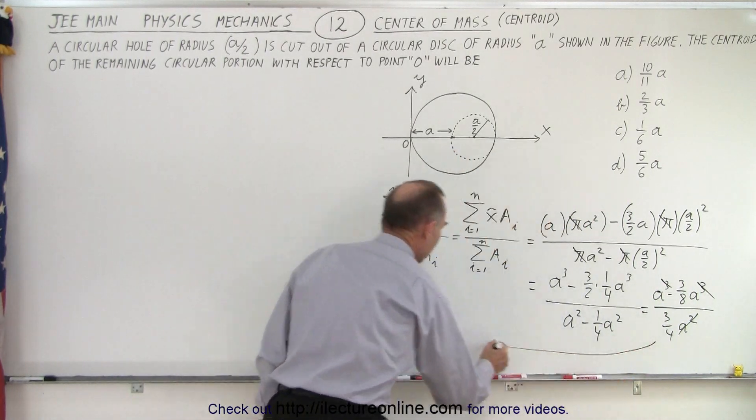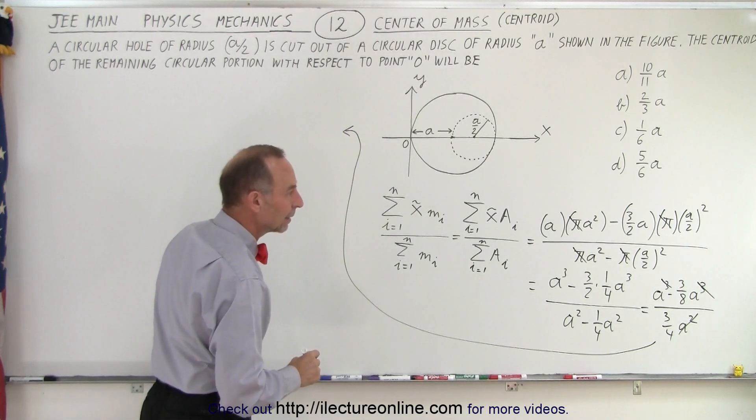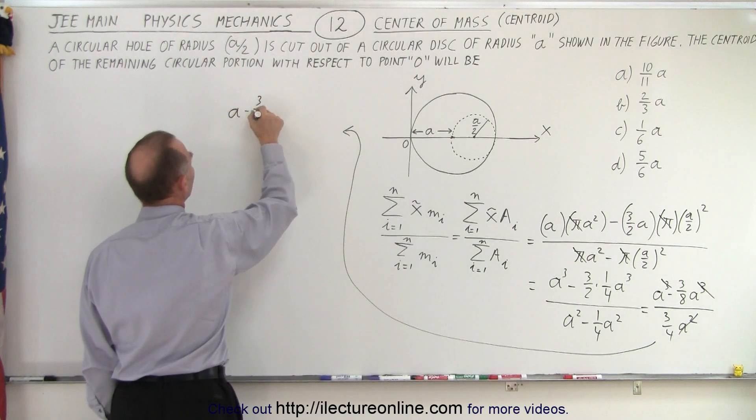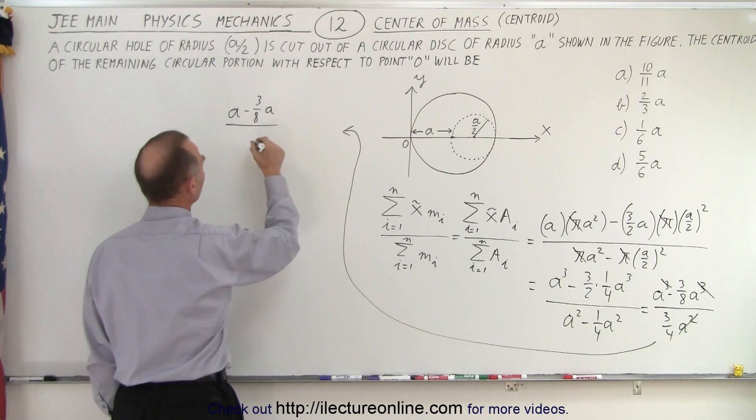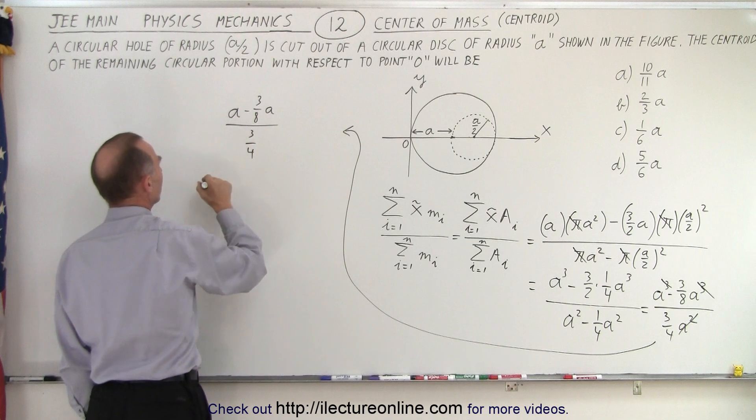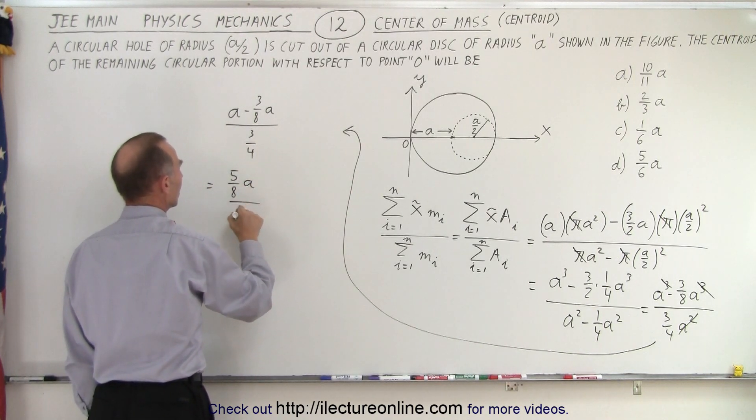So coming up here to finish that off, in the numerator, we have a minus three eighths a. So a minus three over eight a, that would be equal to five over eight a divided by three over four.